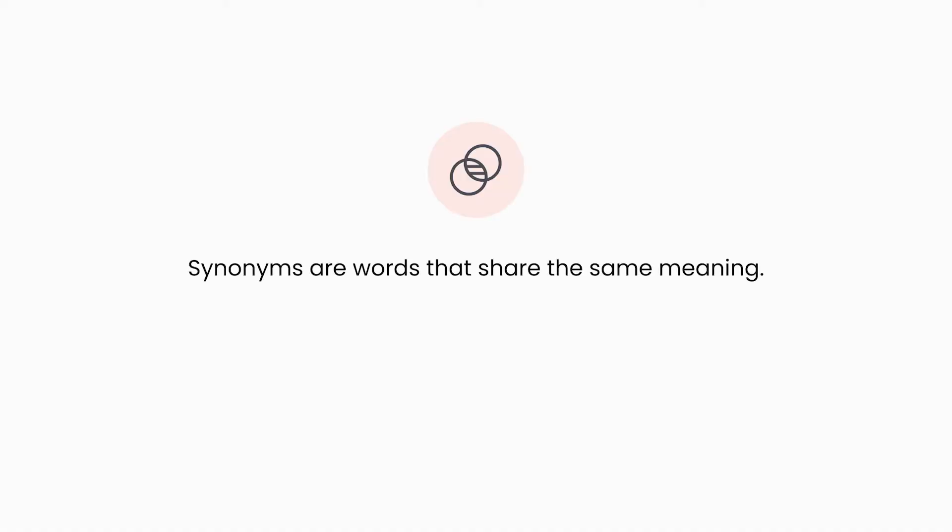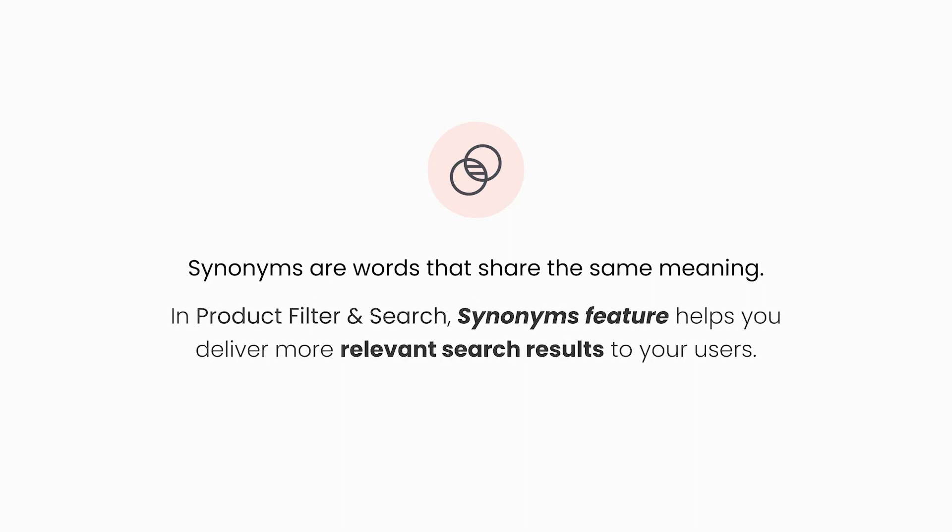By common usage, synonyms are words that share the same meaning. In our app Boost Product Filter and Search, the synonyms feature comes in handy when you want to have different search terms brought up in a search result that includes other searches. In other words, synonym is a super helpful feature which helps you deliver more relevant search results to your users.